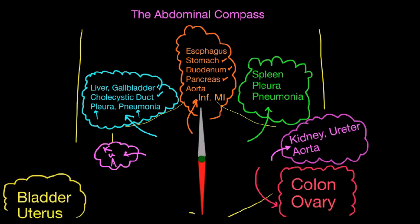Pointing south to the suprapubic area: this region contains the bladder. A very distended bladder can be palpable and painful — from bladder outlet obstruction or cystitis. In females, the uterus can also be painful here. A large uterus containing fibroids can be palpable. An ascending infection — chlamydia or gonorrhea — causes pelvic inflammatory disease, which can present as a very painful uterus. So for suprapubic pain, think bladder and uterus.